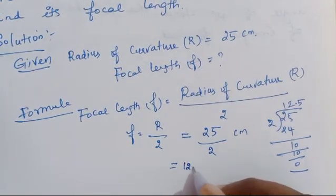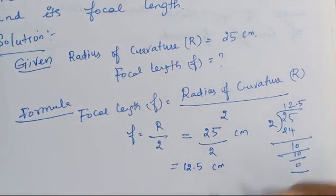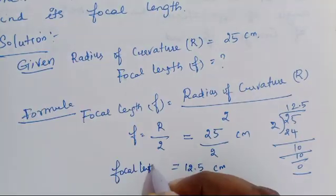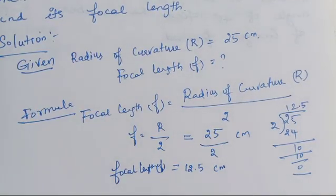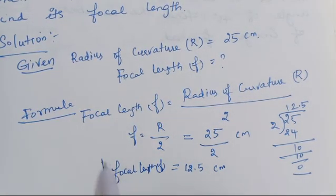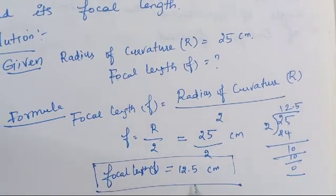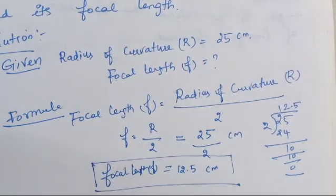The answer is 12.5 cm focal length. Focal length F equals 12.5 cm. Clear? So here, focal length equals 12.5 cm. Clear children?